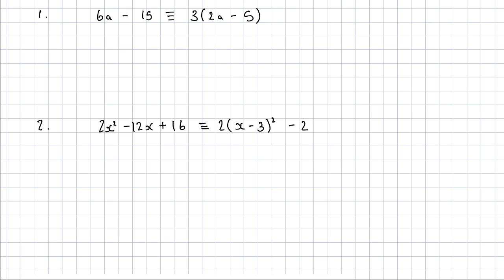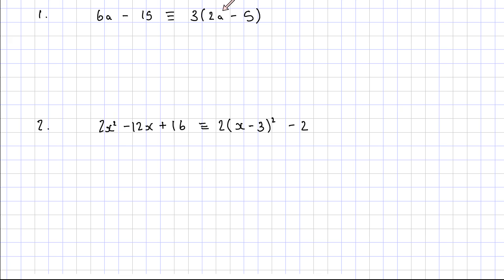The thing about identities is that I can have any number for a. So let's say for example I have 2 here. I'm going to have 6 times 2 which is 12, take away 15 is minus 3. And if I have 2 here, I should get exactly the same thing. So 2 times 2 is 4, take away 5 is minus 1, and 3 times minus 1 is minus 3.